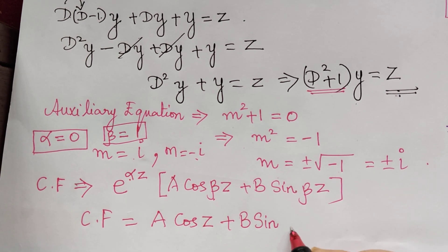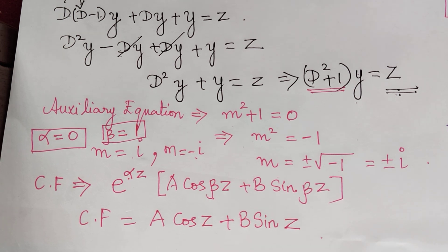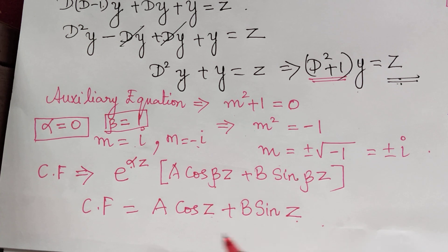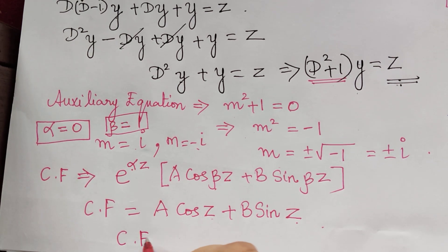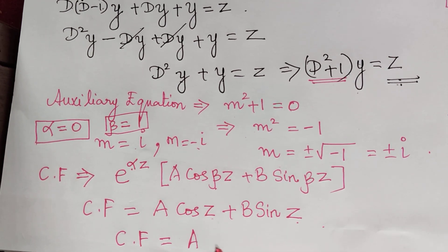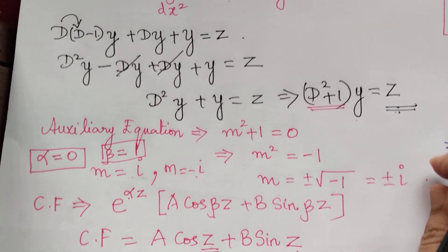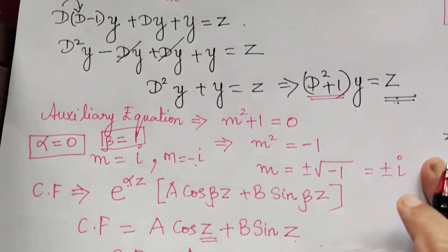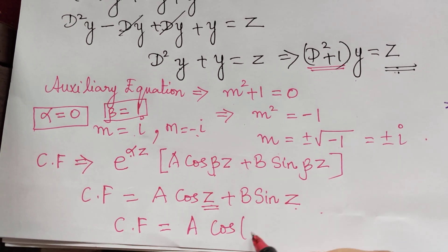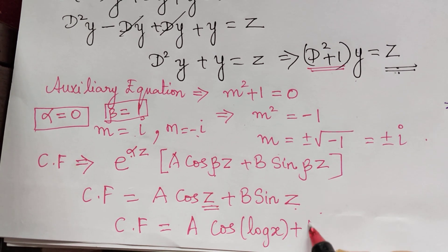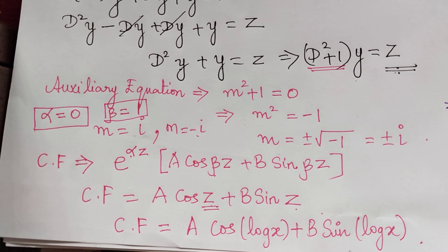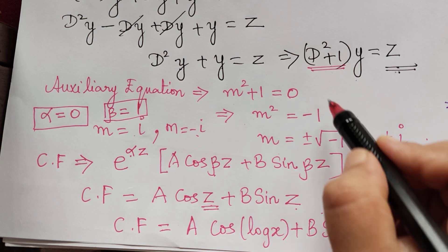Since alpha is 0, e to the power 0 is 1, and with beta equal to 1, the complementary function is A cos z plus B sin z. Substituting back z equals log x, the complementary function becomes A cos(log x) plus B sin(log x).